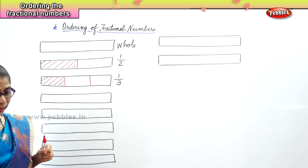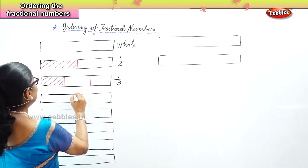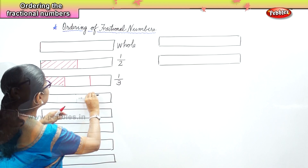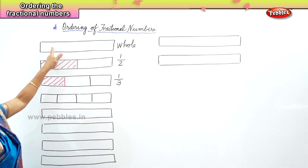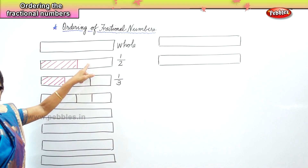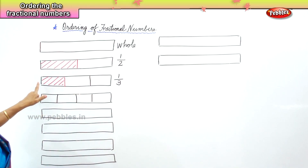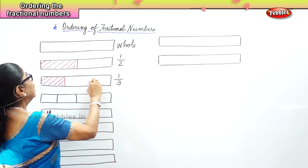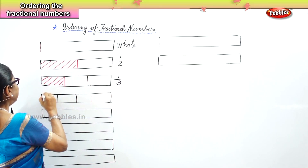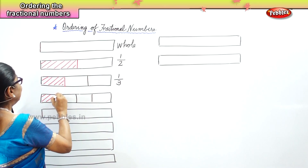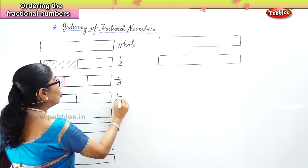Now I am going to divide the same strip into four parts. We have the whole divided into two parts with one part colored, the whole divided into three parts with one part colored, and now the whole divided into four parts. I color one part — that is one out of four — one by four.